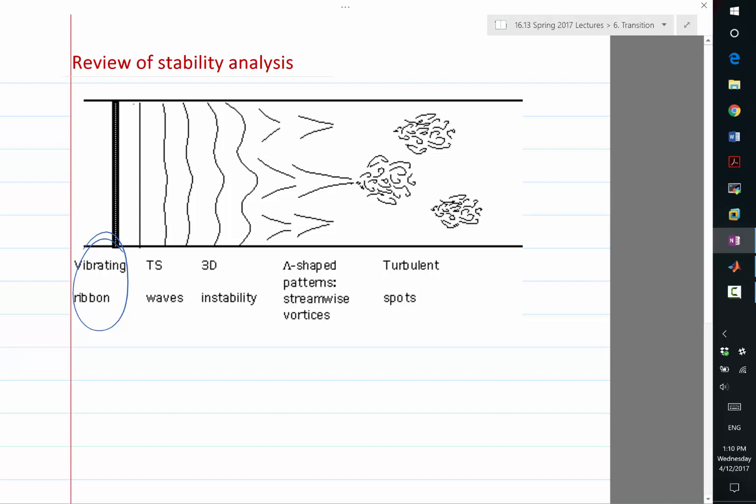But when the TS wave grows to be large enough, it becomes an unstable two-dimensional arrangement.